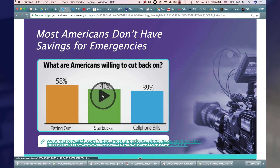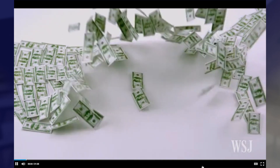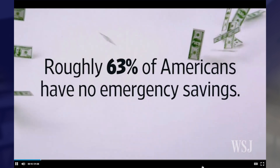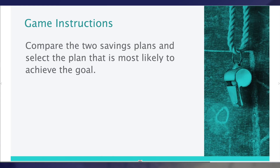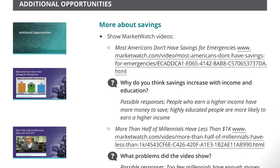During the second activity, follow the teacher's recommendation and either show one of two brief videos about savings, or discuss and examine two savings plans with students. They will choose the one most likely to accomplish a goal. If you show a video, refer to the Additional Opportunities section for the discussion questions.